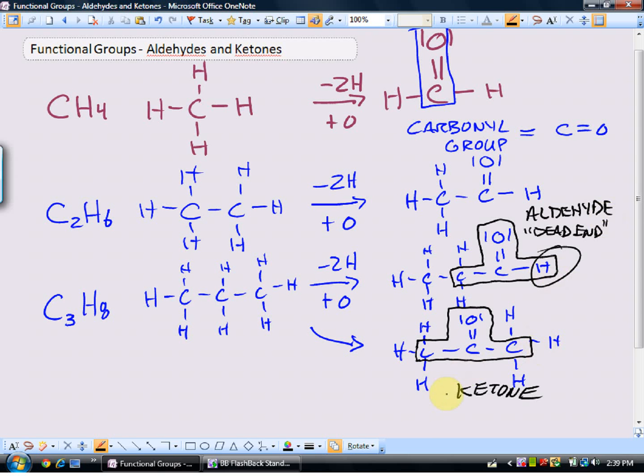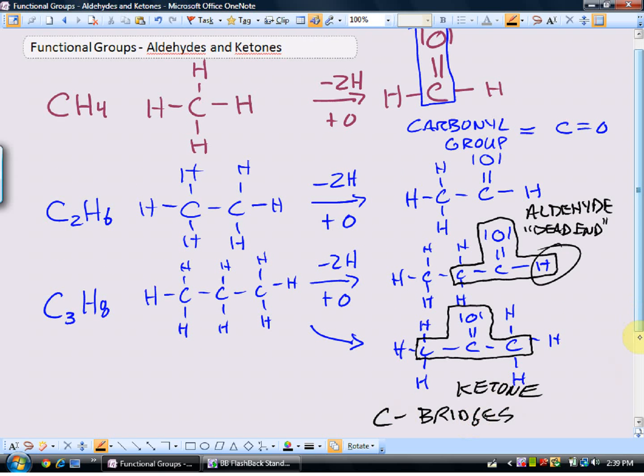Ketones, on the other hand, are bridges. They are carbon bridges. So they are more likely to be found somewhere in the middle of the molecule.